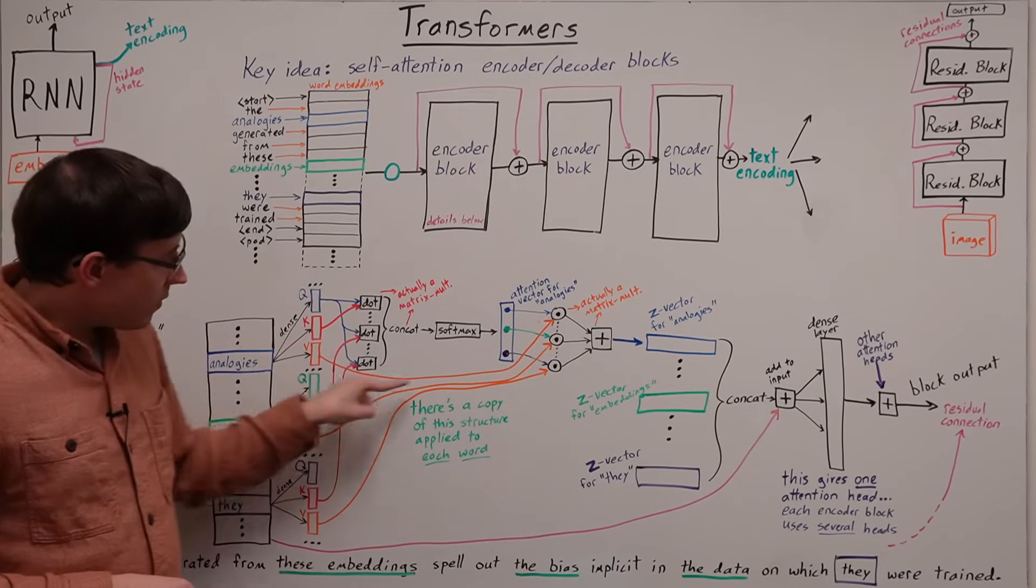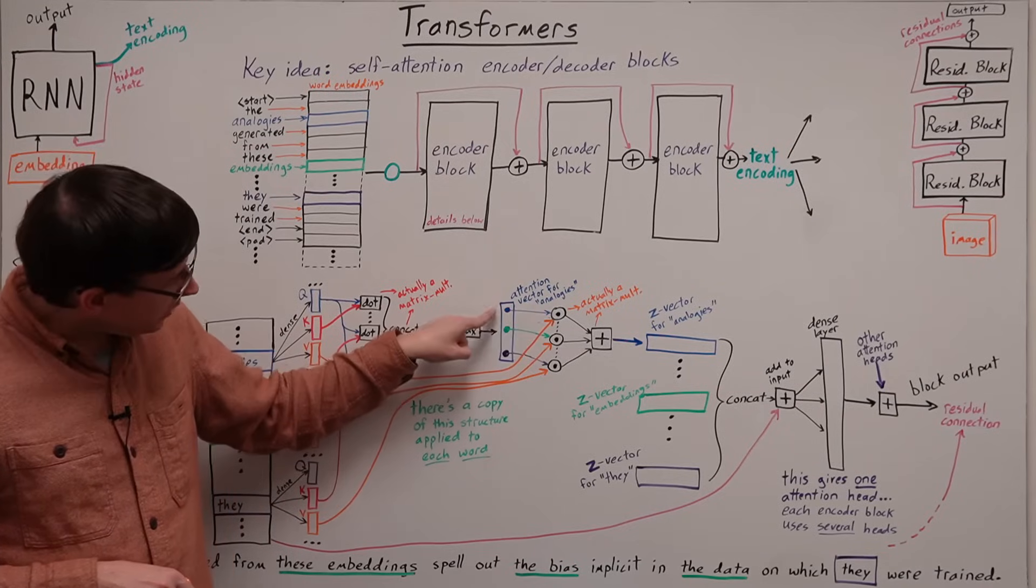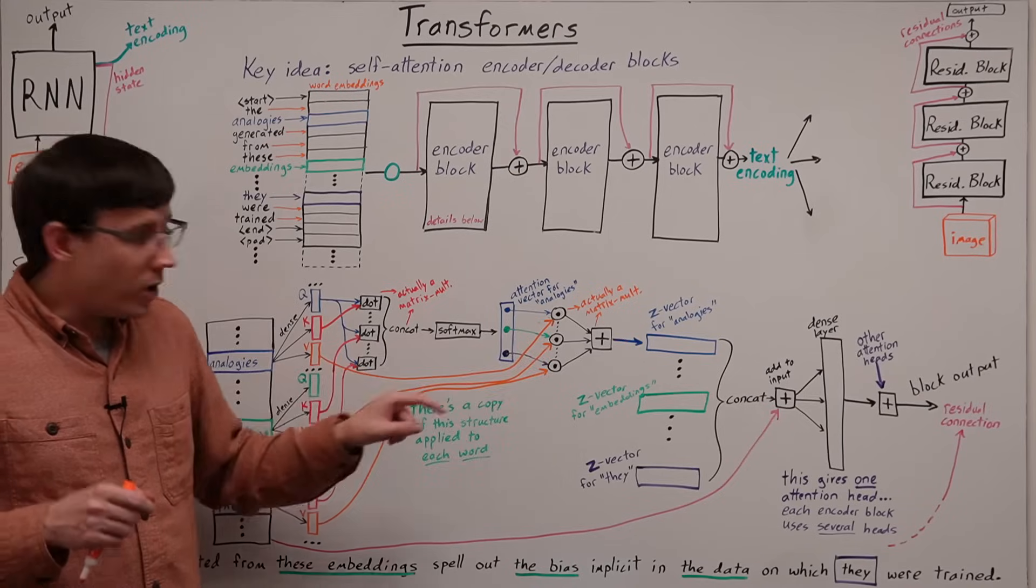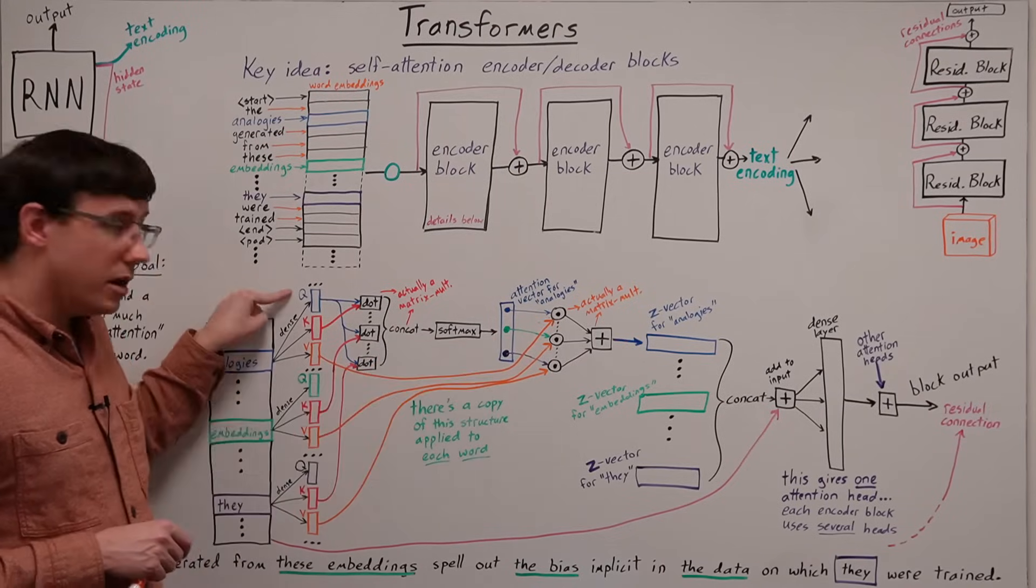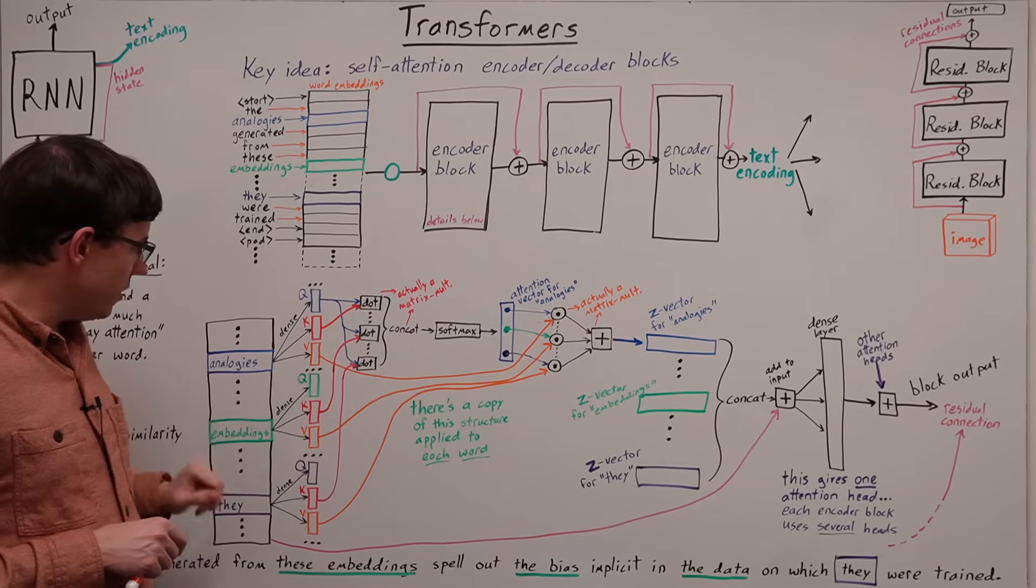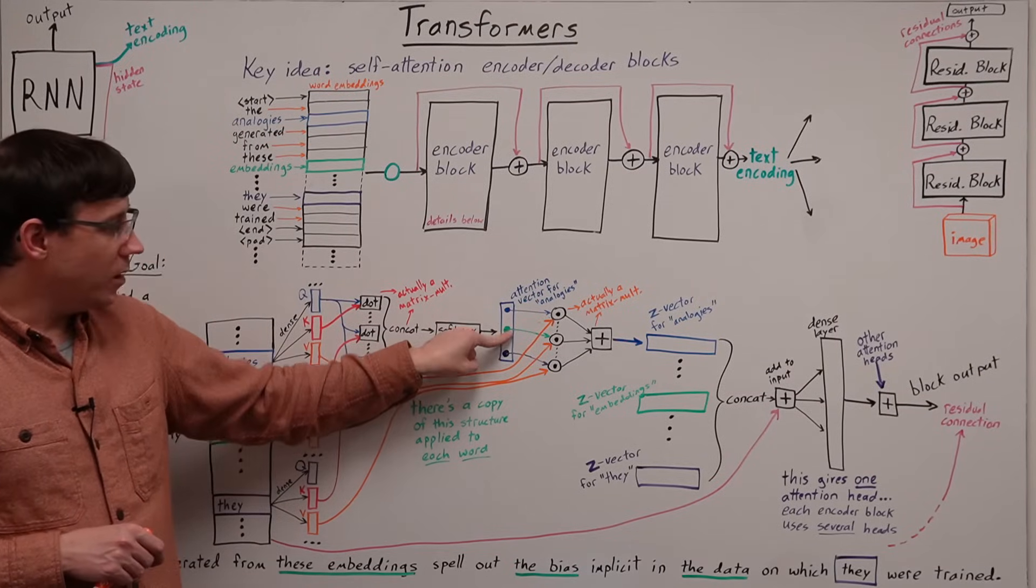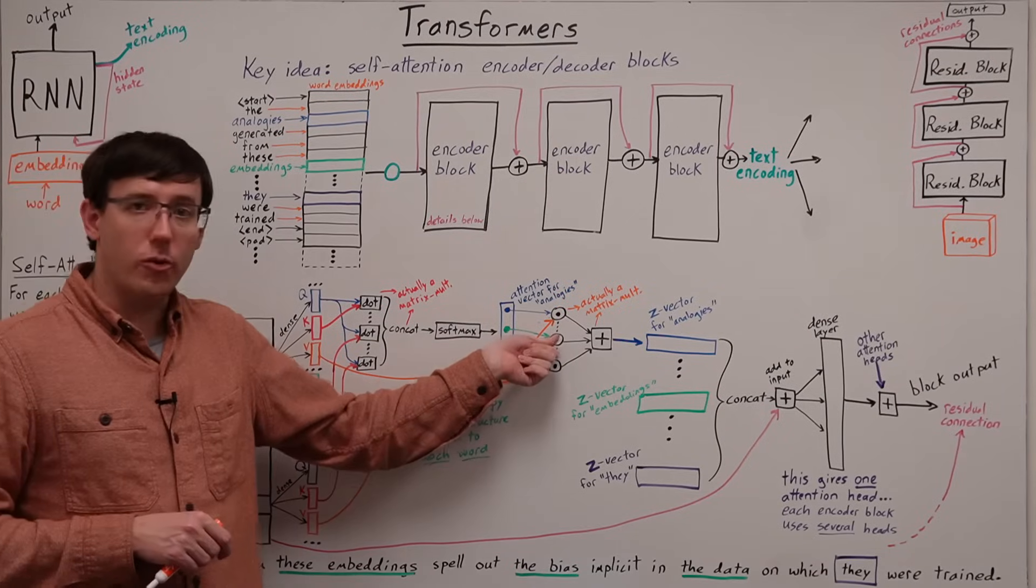So now we take each of the vectors that were the output of the value dense layers, and each of these vectors gets multiplied element-wise with the corresponding entry in the softmax vector. So whatever similarity score we calculated between the query for analogies and the key for embeddings will be multiplied by the value vector for embeddings.